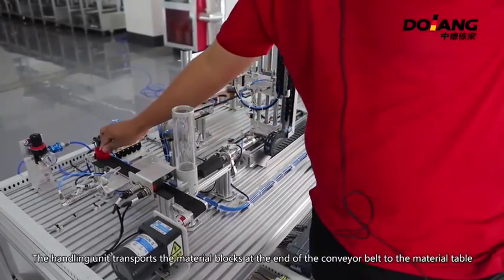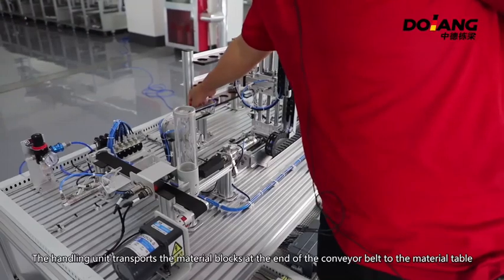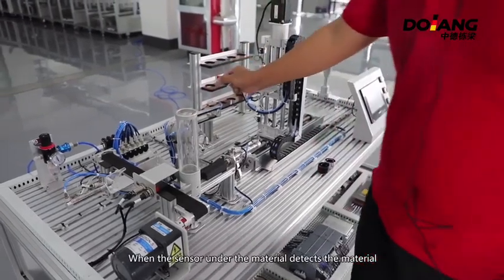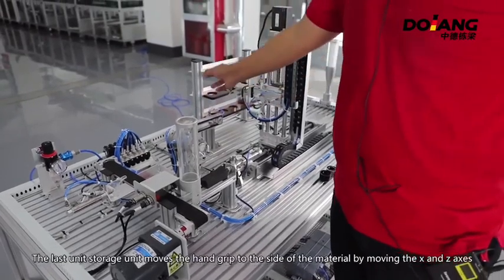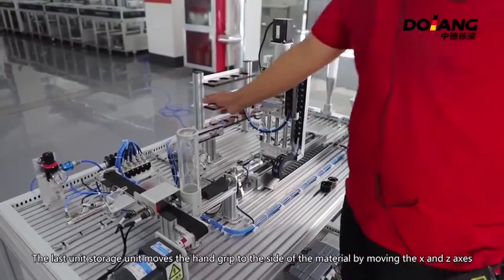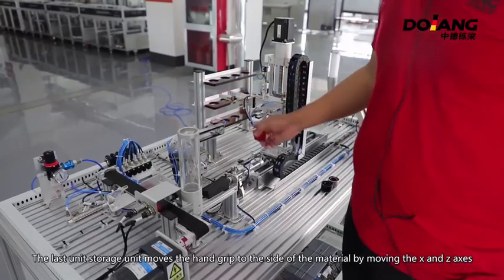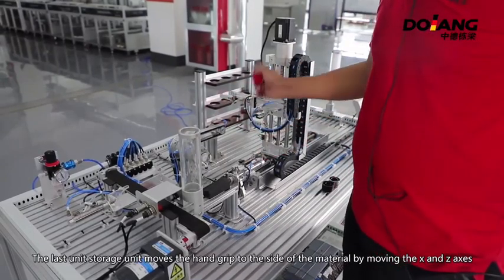The handy unit transports the material blocks at the end of the conveyor belt to the material table. When the sensor under the material detects the material, the last unit storage moves the hand grab to the side of the material by moving the X and Z axes.